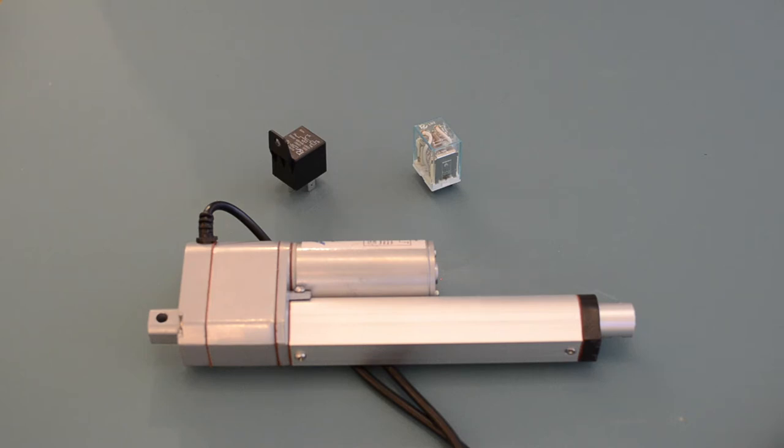Relays are defined by how they operate based on the number of poles and throws they have. Number of poles refers to the number of internal circuits and the number of throws refers to the number of on positions. You can get relays that are single pole single throw, single pole double throw, and double pole double throw.